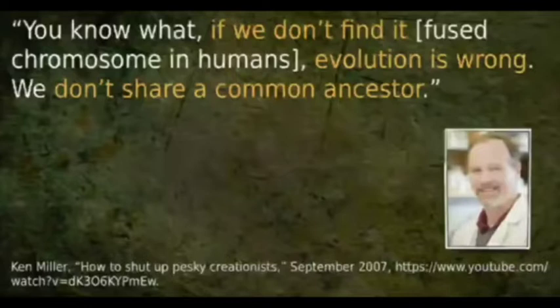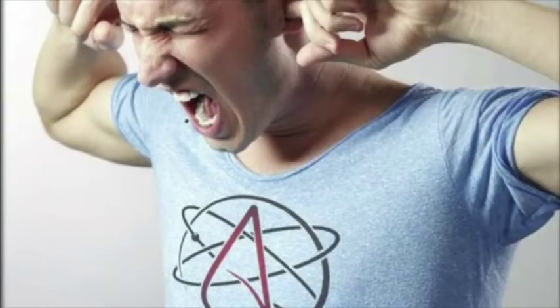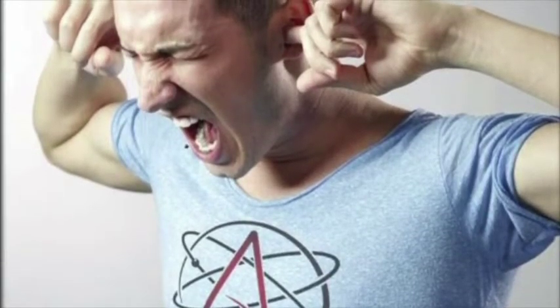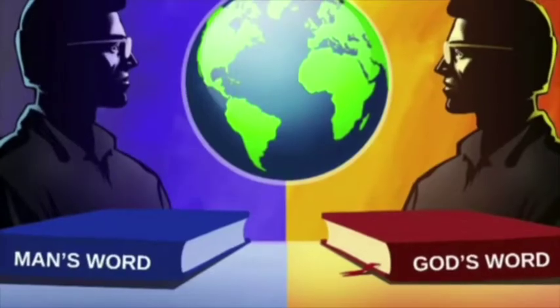They are willing to bet it all on this. Look at what Ken Miller the evolutionist says: 'If we don't find it, evolution is wrong and we don't share a common ancestor.' Sadly for them, this video falsifies the chromosome 2 theory completely, proving we don't share a common ancestor with apes. So we can look at man's assumption of the past or God's unchanging word on the past.